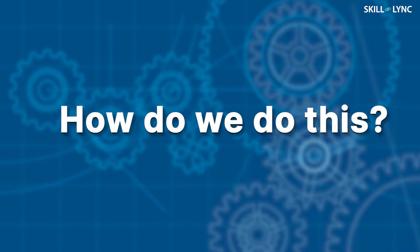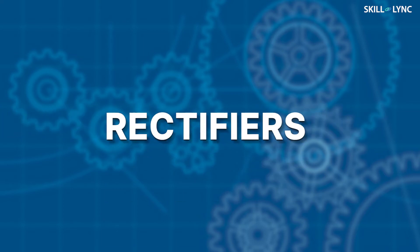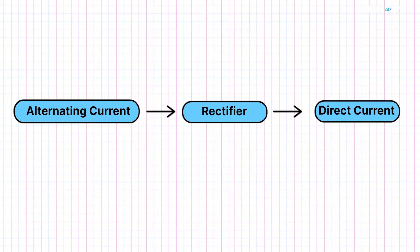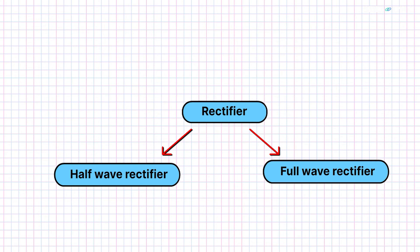This brings us to our next question. How do we do this? Well, this is done with the help of rectifiers. The rectifier is a circuit that converts alternating current into direct current. Rectifiers are essentially of two types: half-wave rectifiers and full-wave rectifiers.